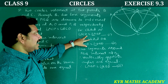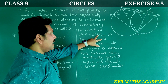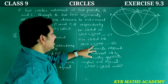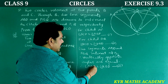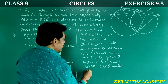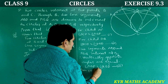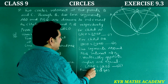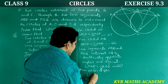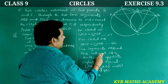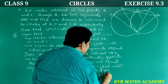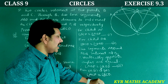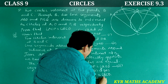From equation 1: angle ACP equals angle ABP. From equation 2: angle QCD equals angle QBD. From equation 3: angle ABP equals angle QBD. Therefore angle ACP is equal to angle QCD — hence proved.